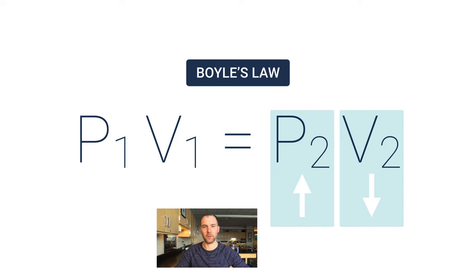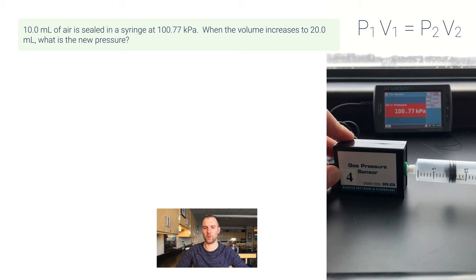Now let's do an example problem. This is one where I actually have a picture here from my lab. I set up a syringe—you can see the piston of the syringe is at the 10 millimeter mark—and I've hooked this up to a gas pressure sensor. The pressure sensor is reading that the pressure in the syringe is 100.77 kilopascals. So 10.0 milliliters of air is sealed in a syringe at 100.77 kPa. When the volume increases to 20 milliliters, what's the new pressure? Well, before we play this video to see what happens, let's try to calculate what the new pressure should be.